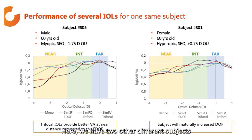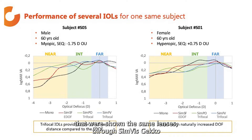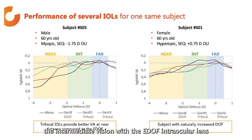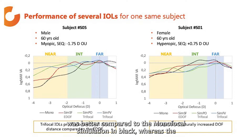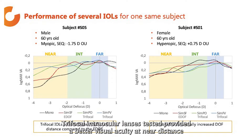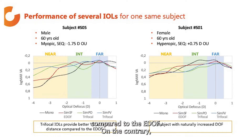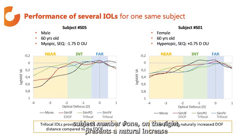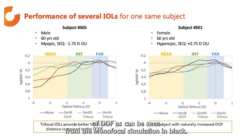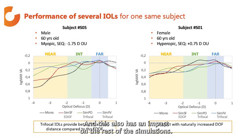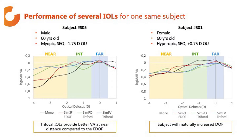Here we have two other different subjects that were shown the same lenses through Symbis Gecko, but the performance was different for each of them. For subject 5 on the left of the screen, the intermediate vision with the extended depth of focus intraocular lens shown in red was better compared to the monofocal simulation in black, whereas the trifocal intraocular lenses tested provided better visual acuity at near distance compared to the extended depth of focus. On the contrary, subject number one on the right presents a naturally increased depth of focus as seen from the monofocal simulation in black, and this also has an impact on the rest of the simulations, so there are no significant differences in performance between the different lenses.